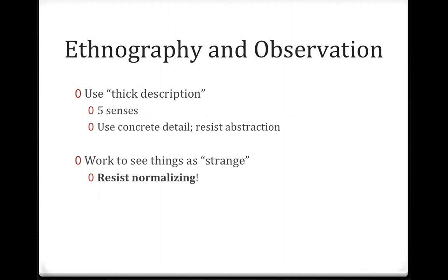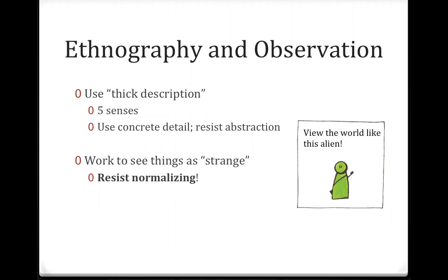Another thing that will help a researcher doing this work is to try to see things as strange — resist seeing anything as normal and not worth noting, and try to take as many notes as possible. Kahn said he was taking five pages of handwritten notes in any one class period — in an hour's time, enough notes to fill five pages. You want to view the world like an alien would — try not to see anything as normal or expected. Describe what happened concretely: this happened, then this happened, this is what it looked like. For example, don't say 'she looked annoyed' — that's an interpretation. The concrete detail would be 'her eyebrows went up' — that's what changed in the facial expression.